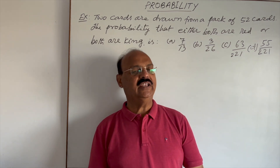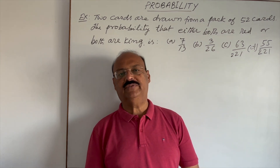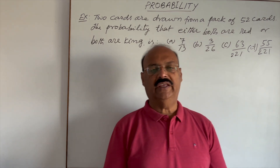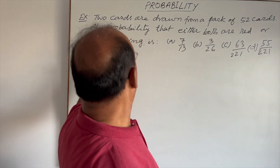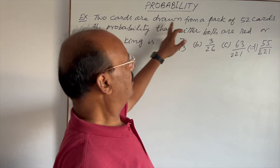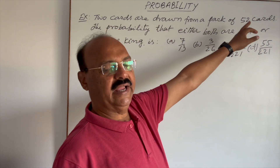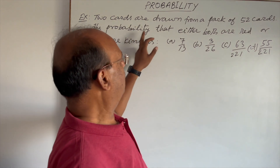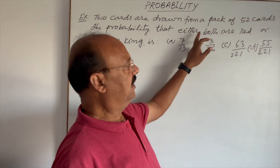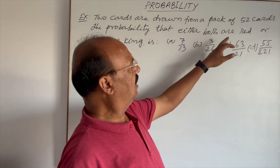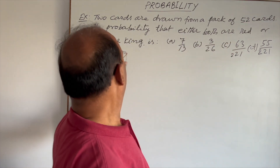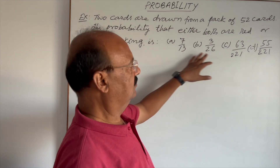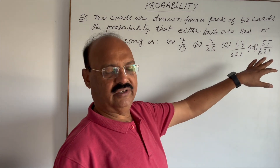Welcome students. Let us see a very important question from the topic probability. The question is: two cards are drawn from a pack of 52 cards. The probability that either both are red or both are king — four options are given.